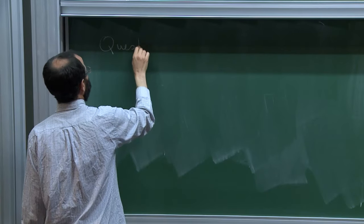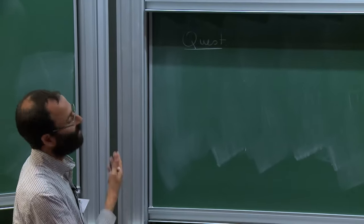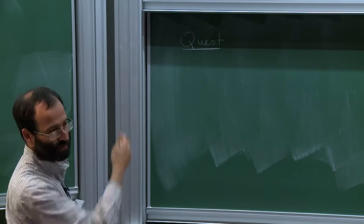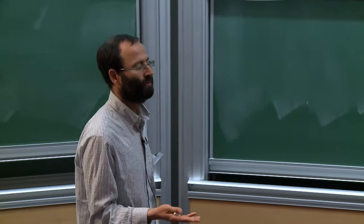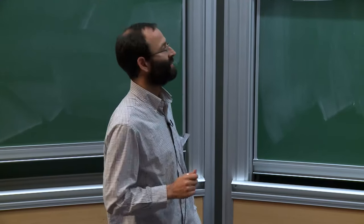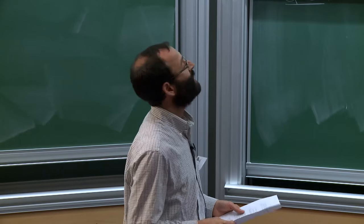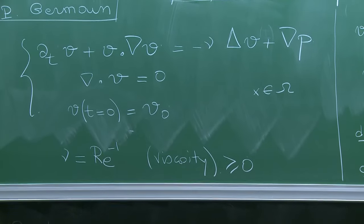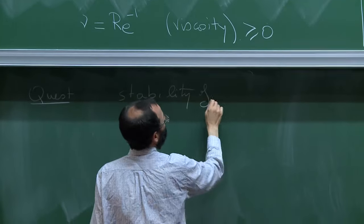The question we are interested in is to understand the asymptotic stability of the simplest possible non-trivial stationary solution. Of course v equals zero is a stationary solution — that corresponds to small data global existence — but we want to go one step further and consider a non-trivial stationary solution. The easiest one is the Couette flow, so we are interested in the stability of the Couette flow.